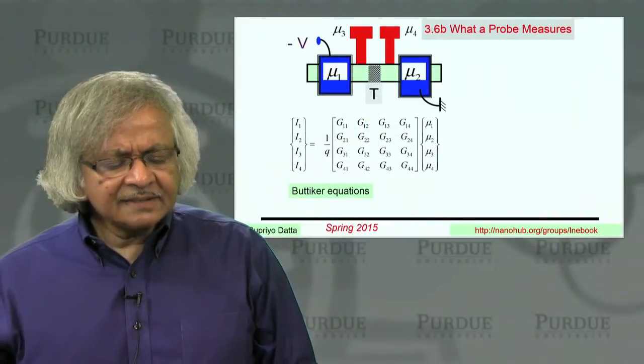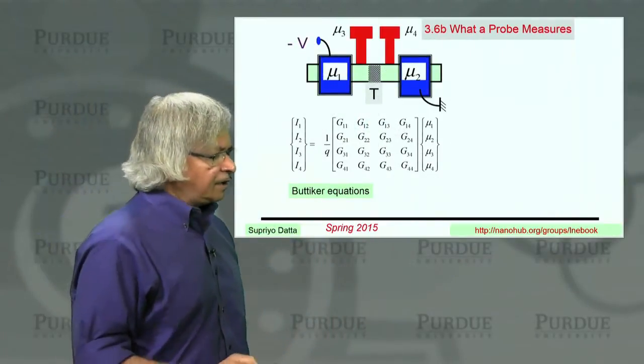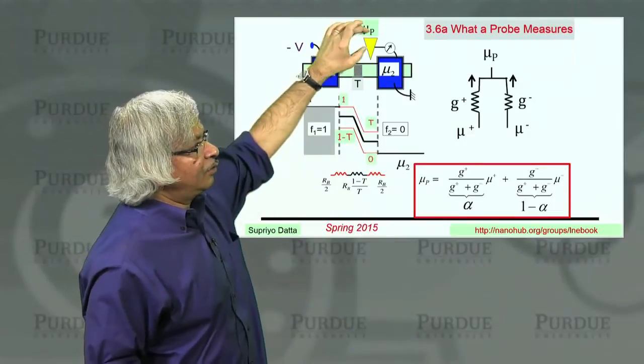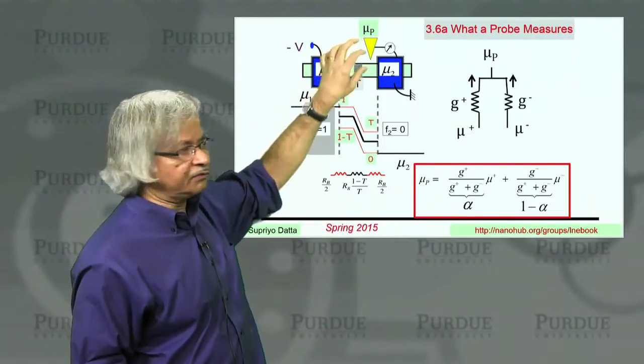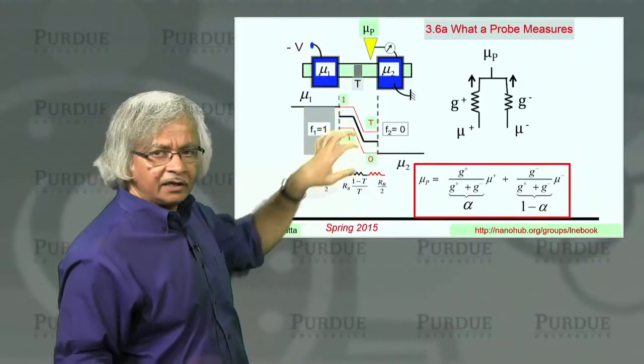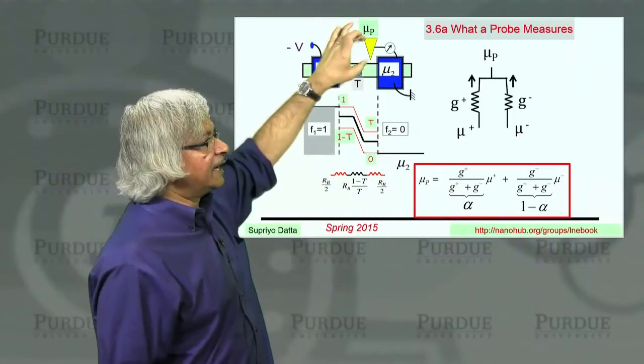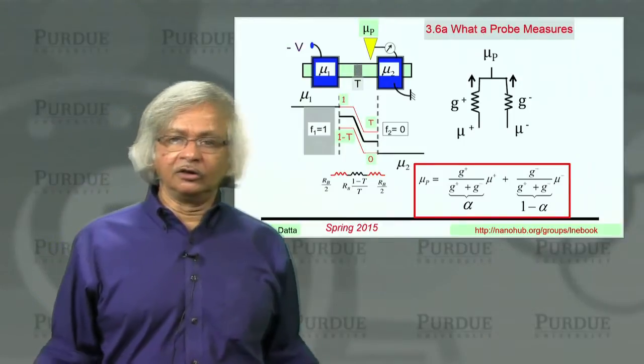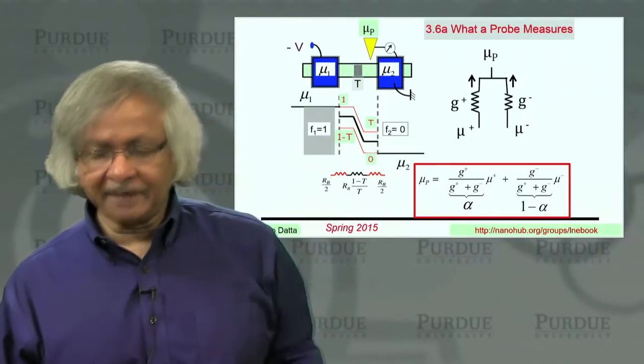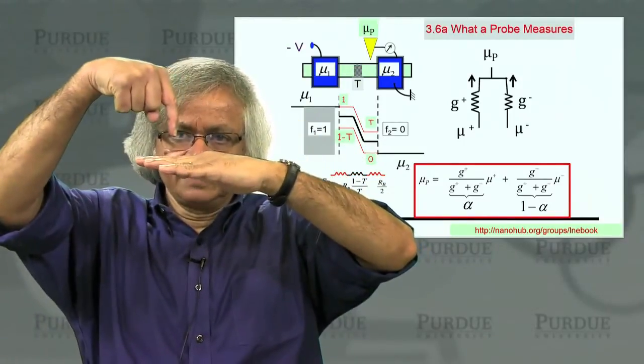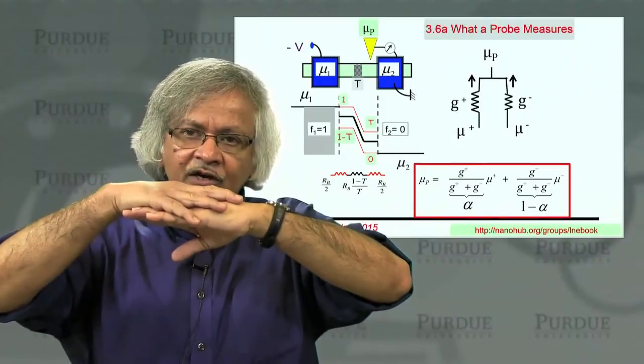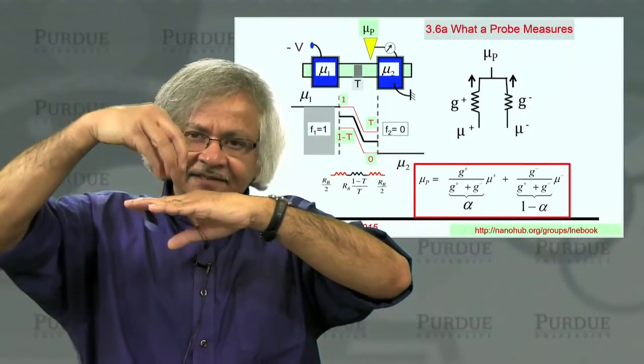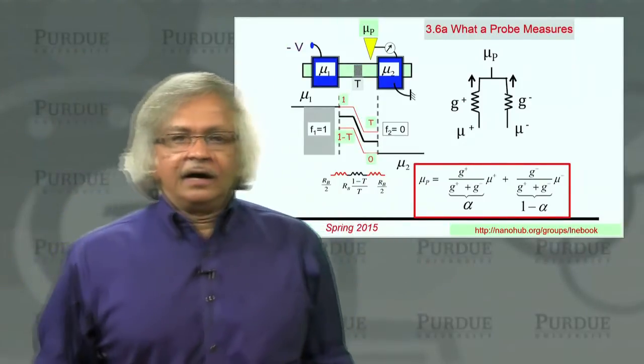Now, this gives you a fairly good way, intuitively, of understanding what a probe measures relative to the quasi-Fermi levels. And it works well as long as this is a weakly coupled probe, or what people call a non-invasive probe. What that means is it's so weakly coupled, it doesn't change what is going on in the channel. It just senses it.